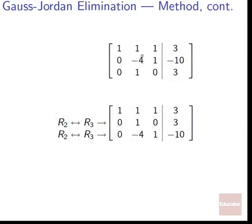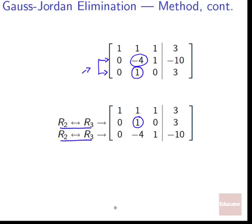Now we need to create a 1 in the next diagonal position. We notice we already have a 1 in row three's second column, so instead of dividing row two by negative 4, we swap rows two and three. After the swap, we have our new matrix with a 1 in the correct position.